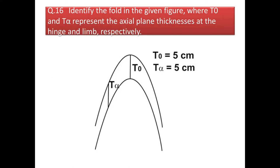Next question: identify the fold in the given figure where T₀ and Tα represent the axial plane thickness at the hinge and the limb respectively. The axial plane thickness at the hinge and the limb are the same — 5 cm. So the fold here should be a similar fold, that is class 2 fold.